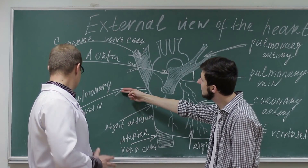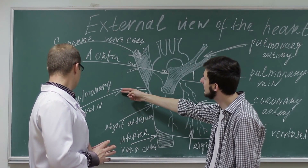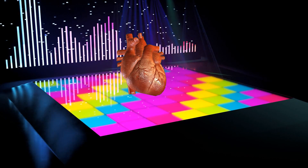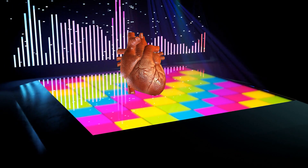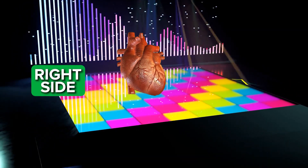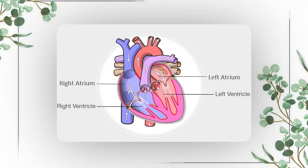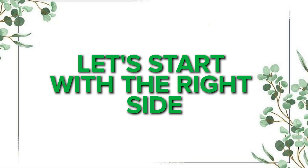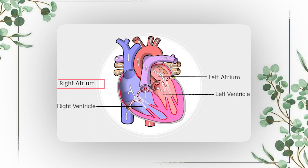You will be impressing your professors and classmates in no time. First off, the heart is like a super organized dance floor with two sections — the right side and the left side — and on each side there are two chambers: the atrium, the upper chamber, and the ventricle, the lower chamber.